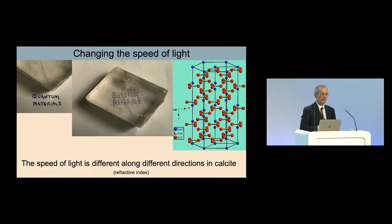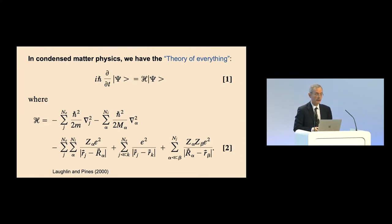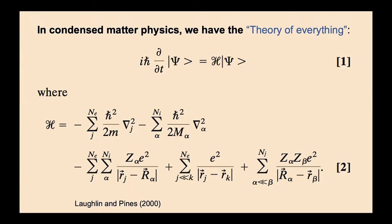Let me step back a little. I talked about the theory of everything, and in condensed matter physics we actually have one — it's the Schrödinger equation. It's written as a simple equation about the rate of change of a wave function, involving the Hamiltonian H, which contains kinetic and potential energy terms. It looks complicated because you have to sum over all atoms in the crystal and over all electrons. But basically, we have the theory of everything. The problem is we have a huge number of particles.